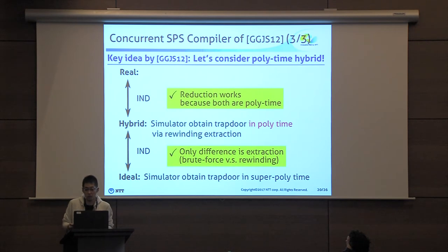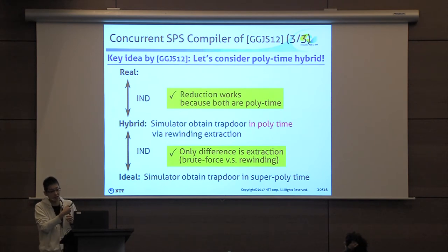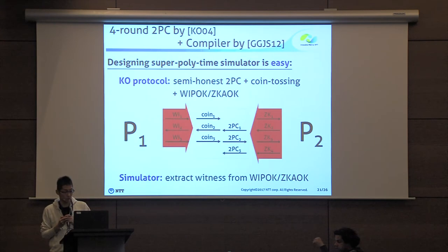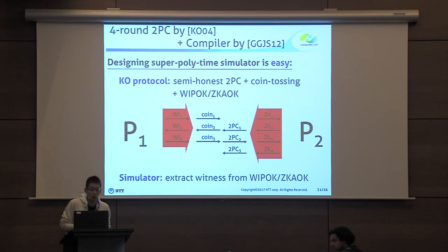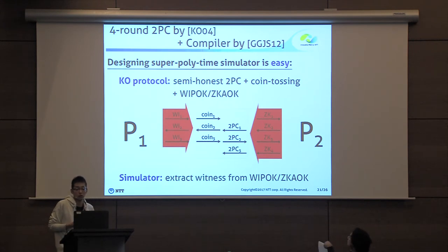Of course, there are many more technicalities in the actual proof, but the most important idea of GGJS is to consider a polynomial-time hybrid between the real world and the ideal world. So let's consider what will happen if we apply the GGJS compiler to the standalone four-round two-party protocol of Katz and Ostrowski, or KO.